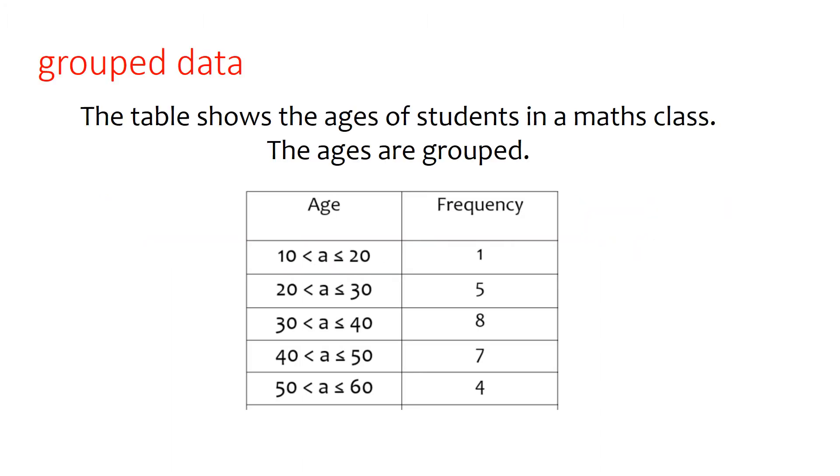So first of all, what grouped data is, it means that instead of having specific values, so in this case specific ages, we're doing brackets of ages, groups of ages. So this table tells us we've got one person in the age group 10 to 20, five people in the age group 20 to 30, eight people in the age group 30 to 40, etc.